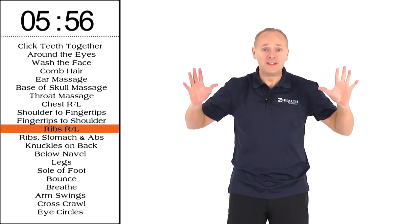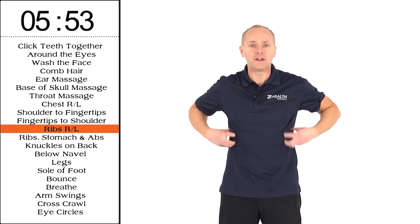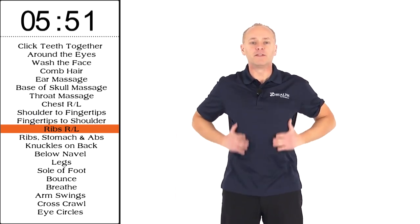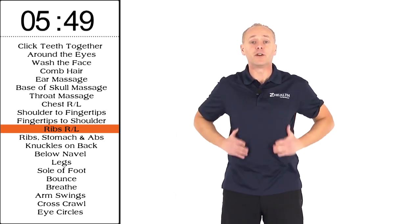All right, from here, we're going to go to our ribs. Take both hands, put them on your ribs, basically underneath your arms, and you're going to be doing some small circles here. Try and stay nice and tall as you do this.